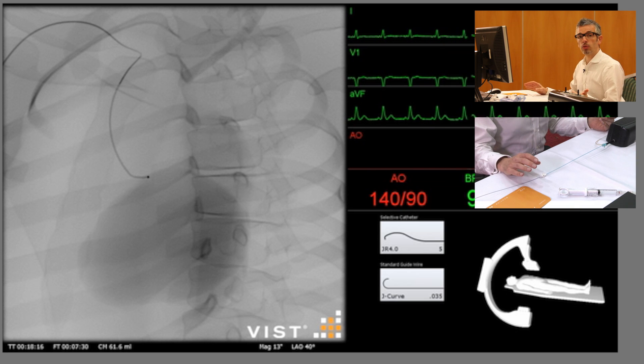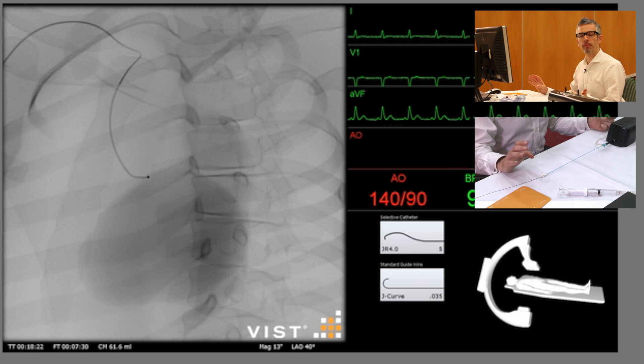Remember, before taking any shots at all, you should always check that the arterial pressure tracing is a normal one and not damped in any way. If it's damped, it may indicate that the tip of the catheter is up against the wall of the artery, or particularly on the right coronary artery, that it's into the small conus branch.